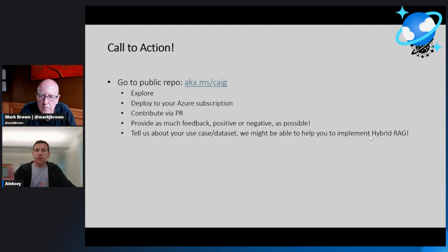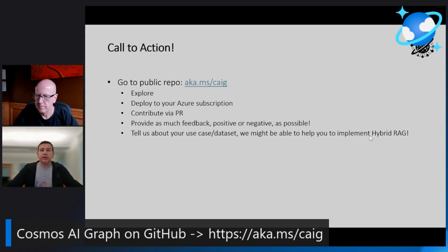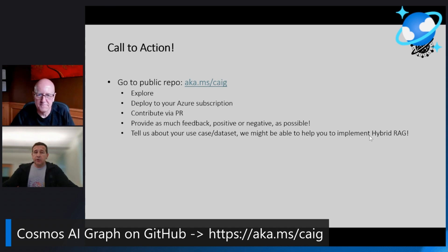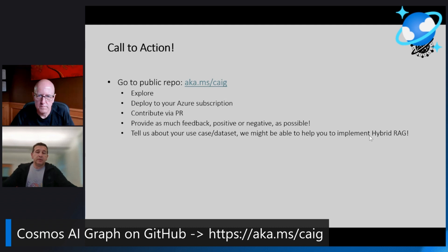A quick call to action: there is a public repo we've published. Chris already gave the URL — aka.ms/CAIG, Cosmos AI Graph. We encourage you to explore it and deploy it to your Azure subscription; there's a very easy script to execute. You can contribute via pull requests, provide feedback positive or negative, and we want to hear your use cases — we want to hear about your datasets that might or might not be covered by this implementation. We might be able to help you implement a hybrid RAG solution as well; we do have resources for that.